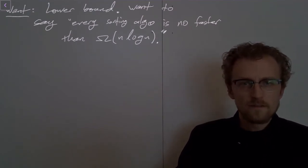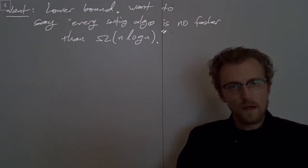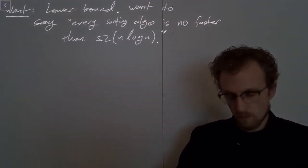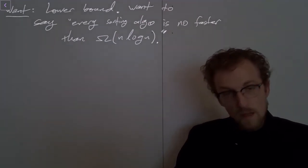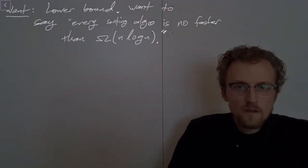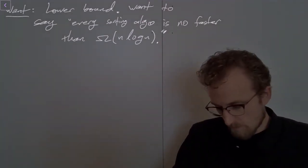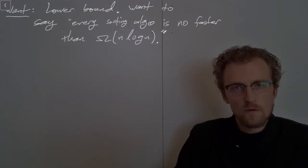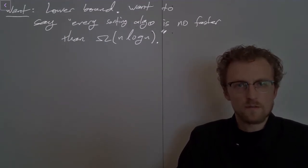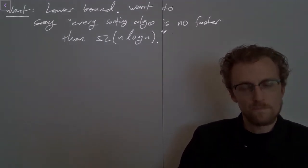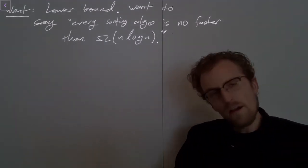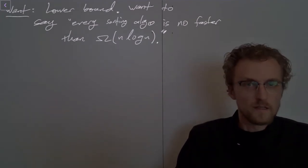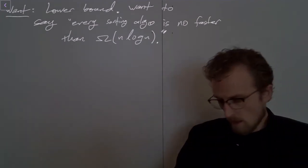Our goal is to identify a lower bound for the time complexity of sorting n numbers. Maybe we can find a lower bound that says every sorting algorithm is no faster than n log n. It's not at all obvious to see how we can develop that kind of lower bound yet.